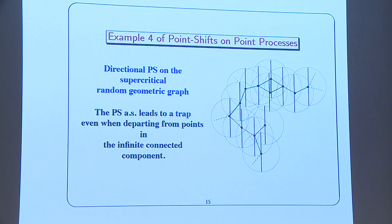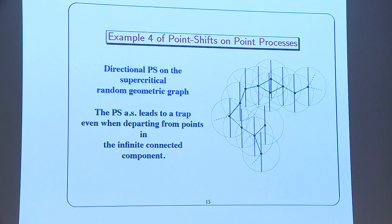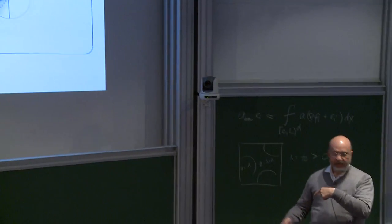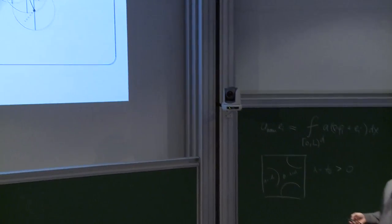Another example is the supercritical random geometric graph. In the percolating case there is a giant component, and you apply the directional point shift on this graph — go to the closest point to the east in a myopic way. The giant component has complex branches that may end. In this routing algorithm you get traps: the route, because it is myopic, gets stuck at points where there is nobody in the east half-disk.